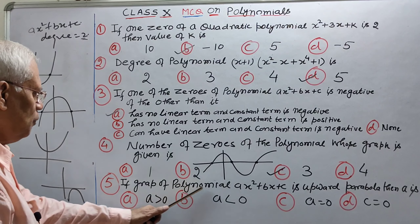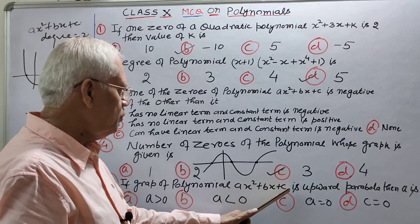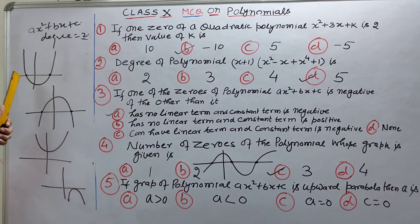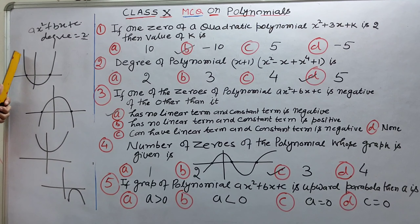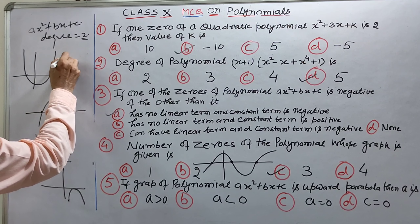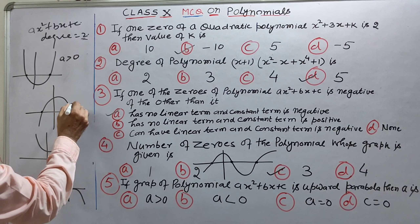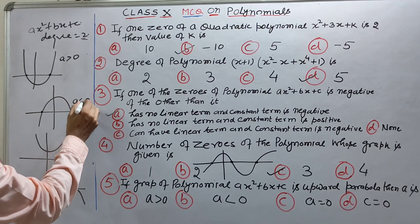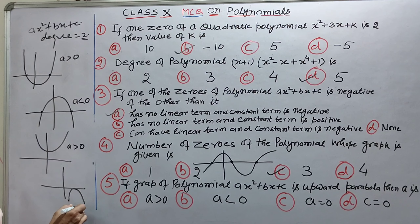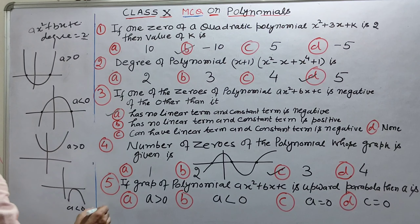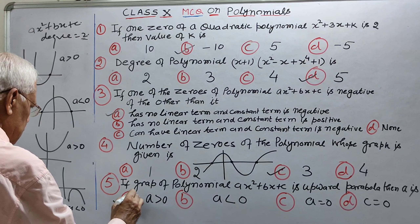Fifth question: graph of polynomial x square plus bx plus c is upward parabola. Yeh upward parabola hai, yeh downward parabola hai. Agar upward parabola hai, toh yeh tabhi possible hai jab a positive ho. Downward hai toh a negative hoga — isme a positive hoga aur isme a negative hoga. So answer is A.